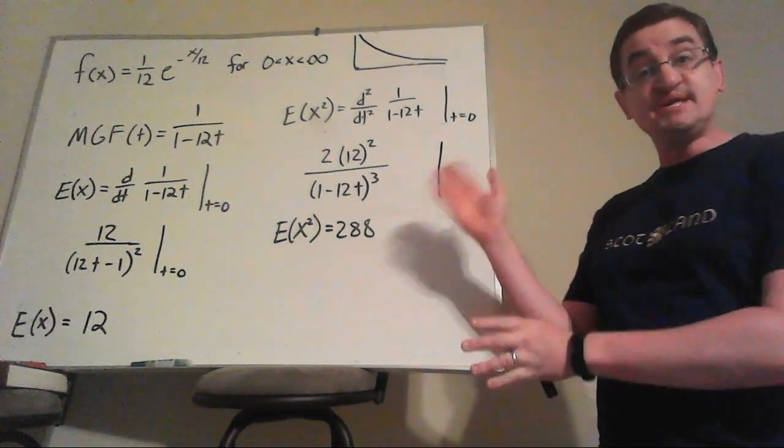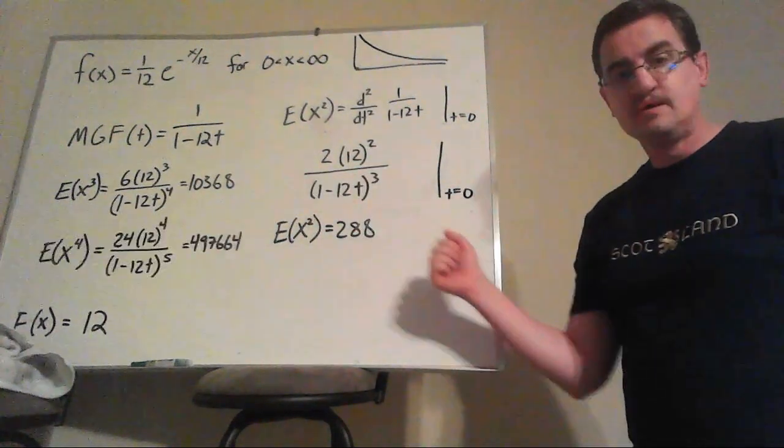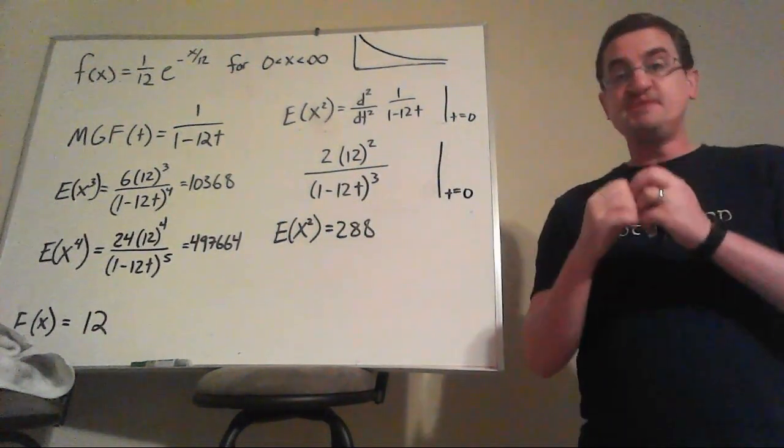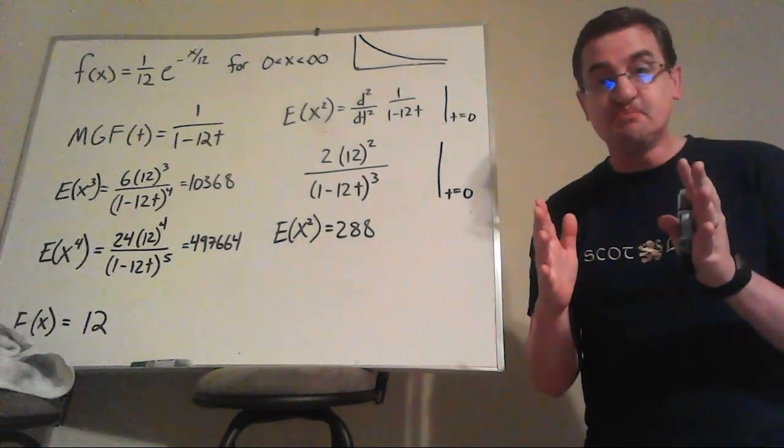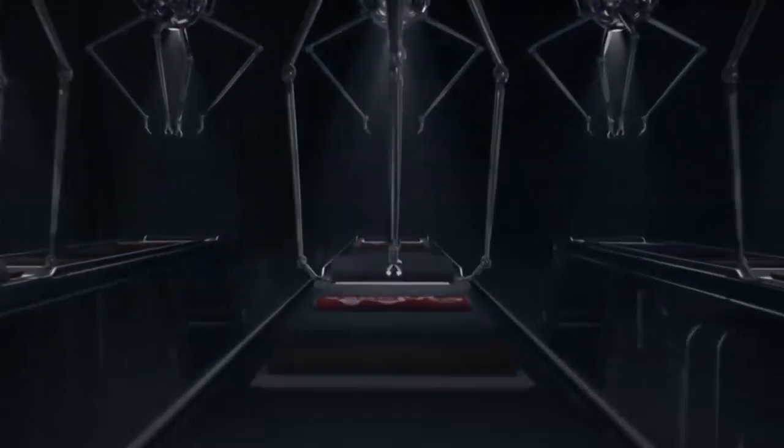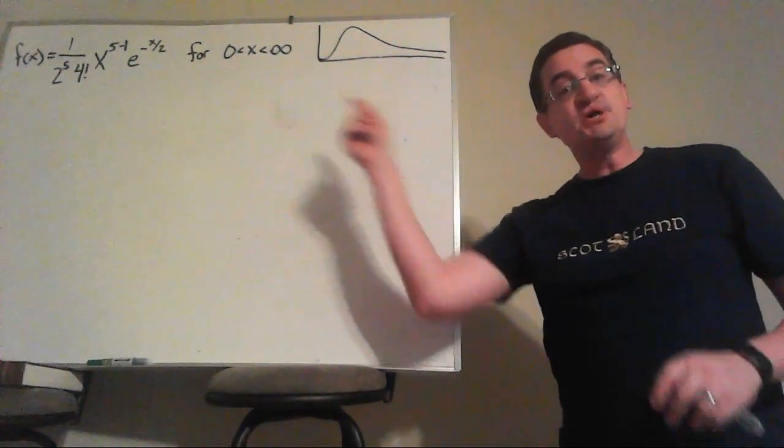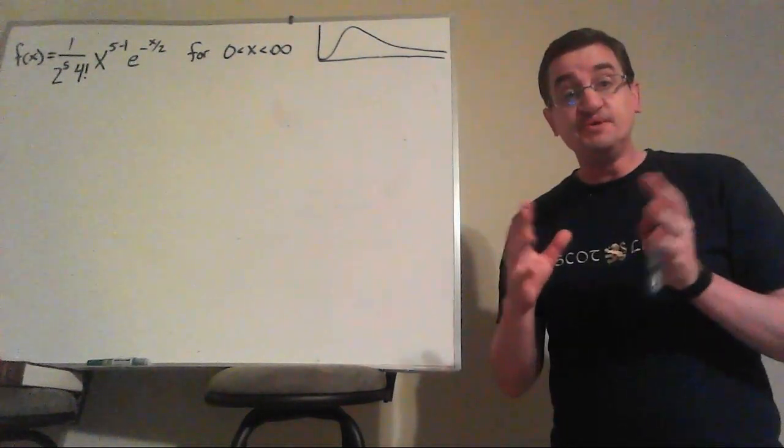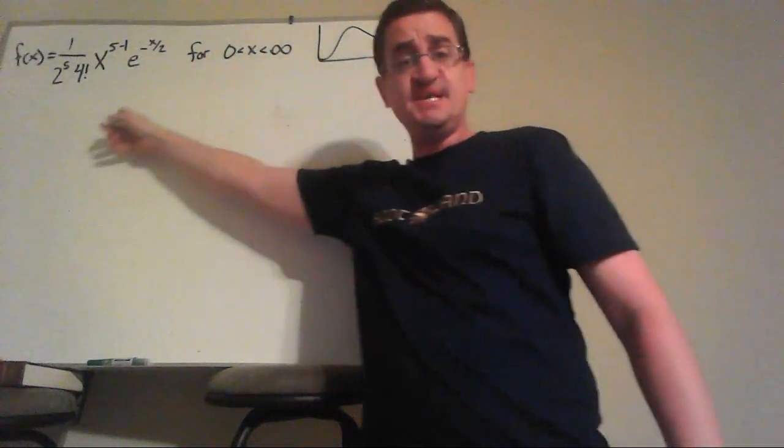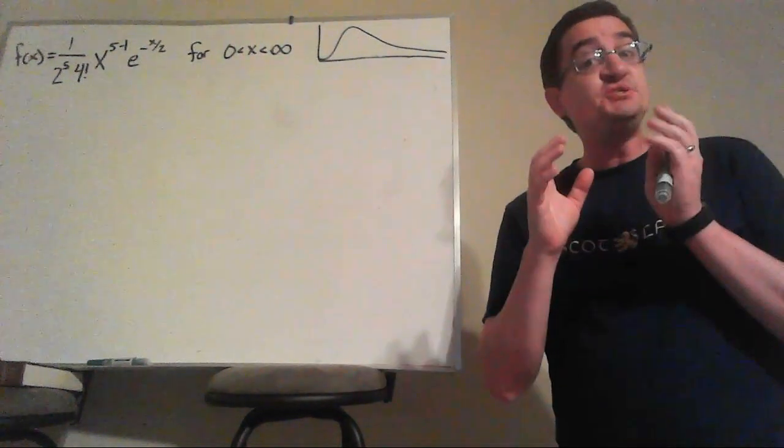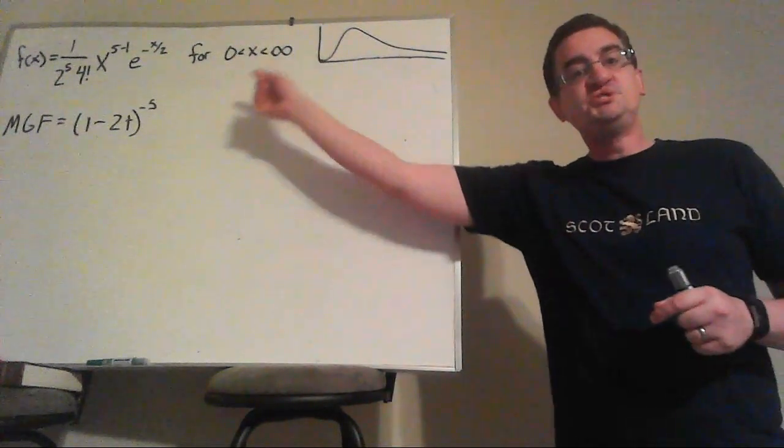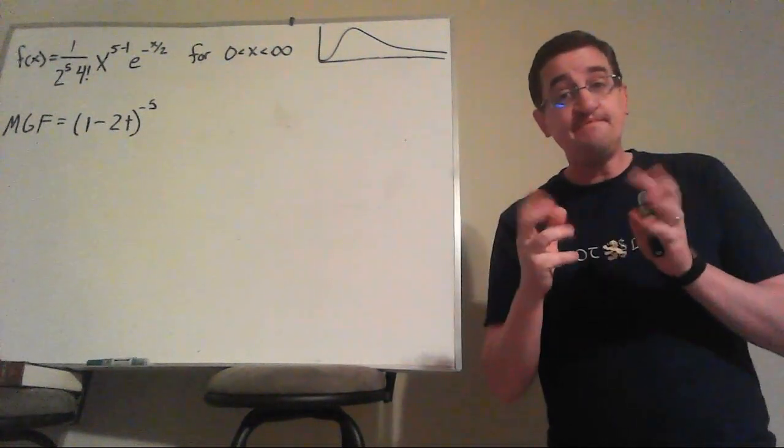And we could do this all day. The third moment or the fourth moment, this moment generating function becomes a factory to spew out these moments. Let me give you another example. This is called the gamma distribution. Very useful in real life. Look at this thing. Nobody wants to integrate that.